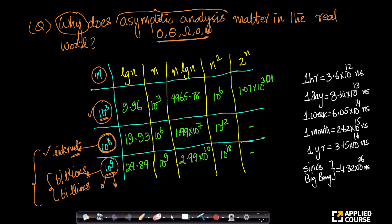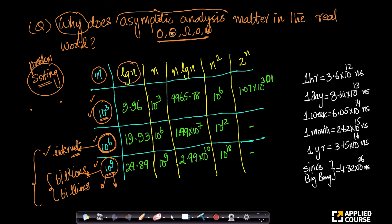Now, if the input size is a thousand versus a million versus a billion, imagine if I have a sorting algorithm — or any problem for that matter. If there was an algorithm that could solve it in log n, imagine having algorithm A1 with time complexity log n, algorithm A2 with order of n, algorithm A3 with order of n log n, algorithm A4 with n squared, and algorithm A5 that takes 2 power n time.